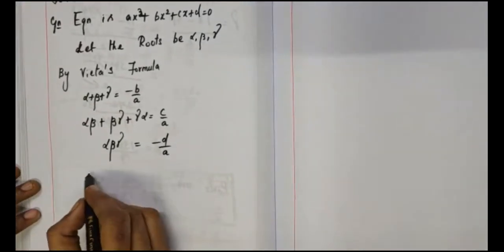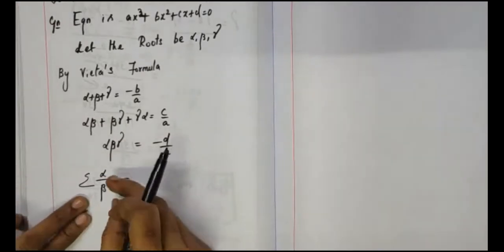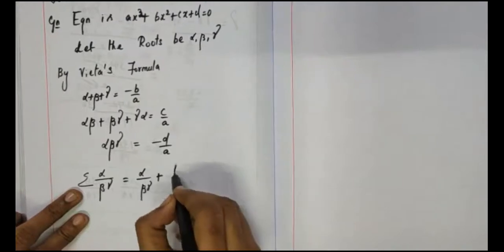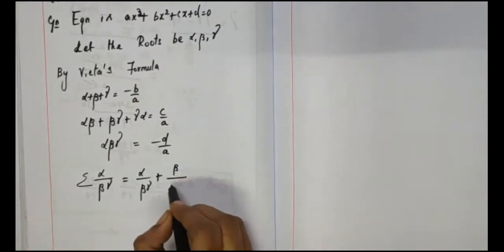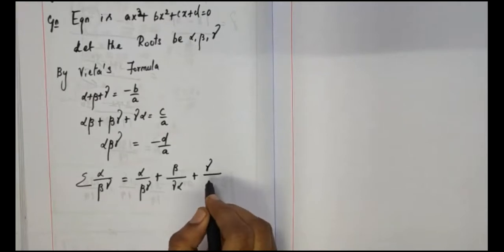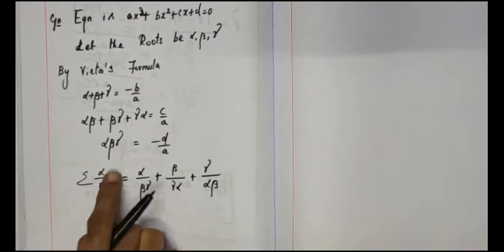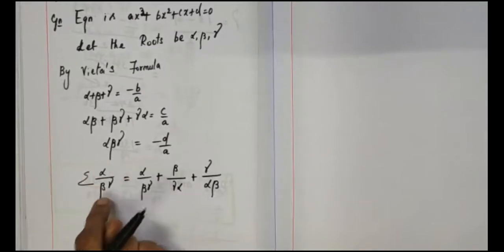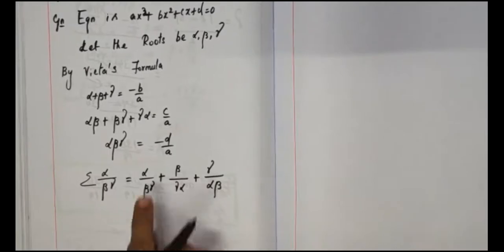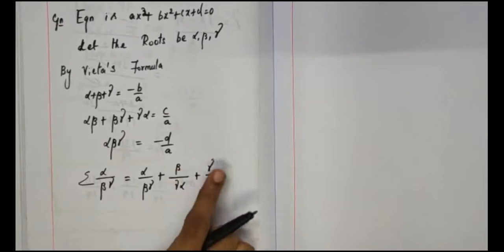The question asks for sigma alpha by beta gamma. This term is summation: alpha by beta gamma plus beta by gamma alpha plus gamma by alpha beta. In the pattern, the terms are added. So I will separate alpha from the denominator at beta gamma, beta from the remaining two, gamma from the remaining two.